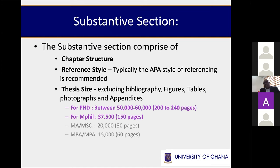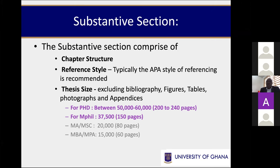That is the preliminary section. When you come to the substantive section, it comprises the chapters and their structure, and of course the reference style. Typically the APA style of referencing is recommended, but depending on which school or college you are coming from, it could be different. The size of the thesis: for PhDs you are looking at between 200 and a maximum of 240 pages, and for MPhil a maximum of 150 pages. At 250 words per page, that translates for the PhD to between 50,000 and 60,000 words, and for MPhil about 37,500 words.